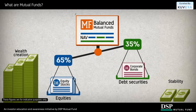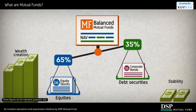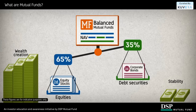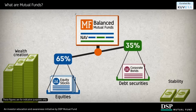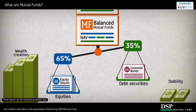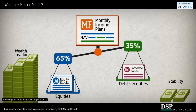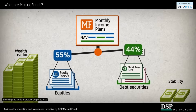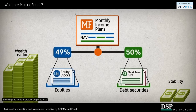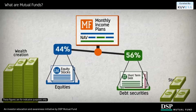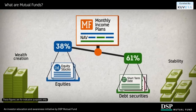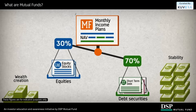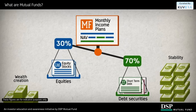However, there can also be other asset allocation patterns among hybrid funds. For instance, monthly income plans are debt-oriented hybrid funds which aim to generate regular income primarily through debt instruments while also investing a small portion in equities.